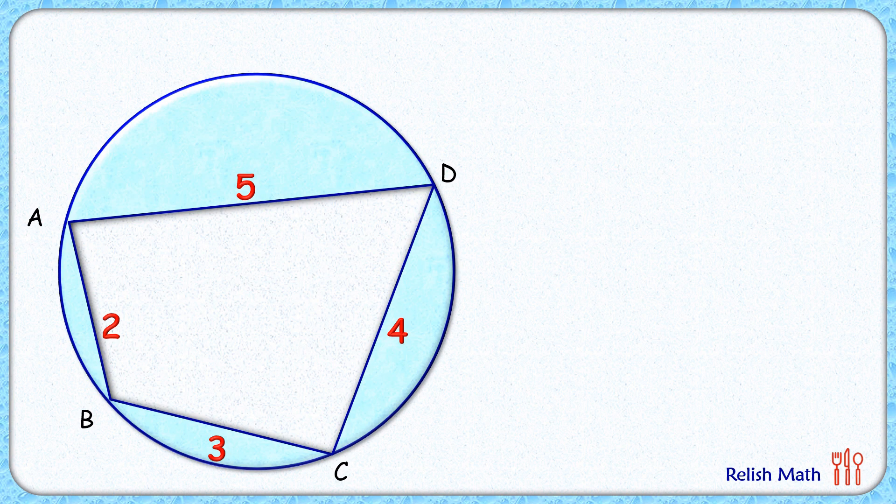Now, to find the radius of the circle, let's check the solution. Let's start by joining the diagonal of quadrilateral AC. Let's assume this angle D here is alpha degrees. Thus this angle B, we know that in a cyclic quadrilateral, the opposite angles are supplementary, so angle B will be 180 minus alpha.